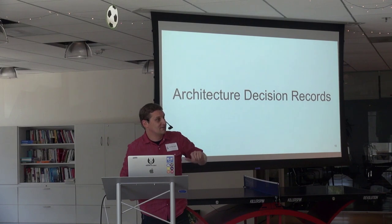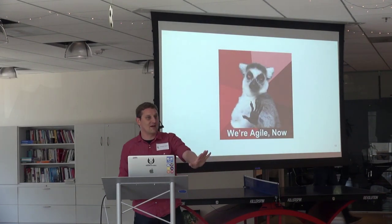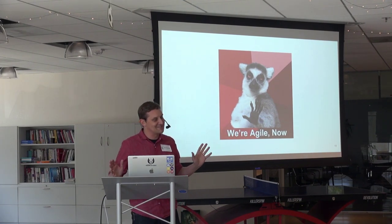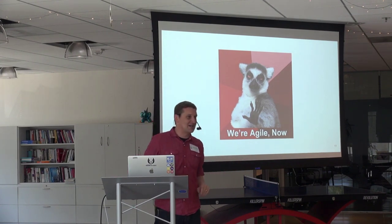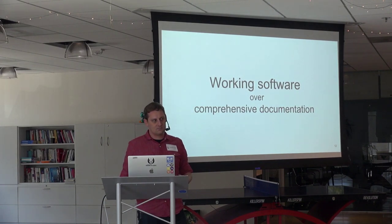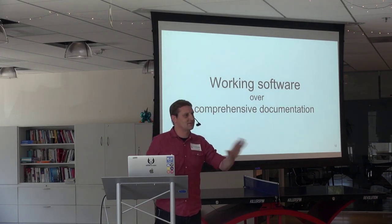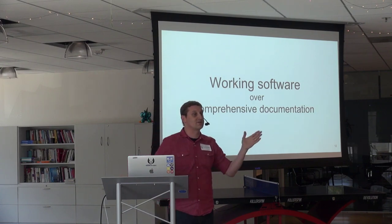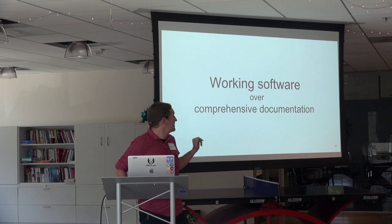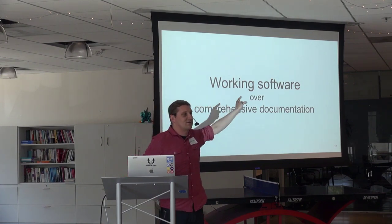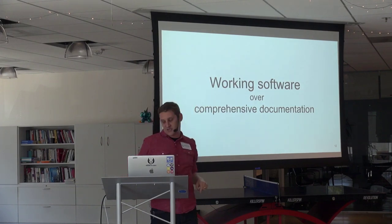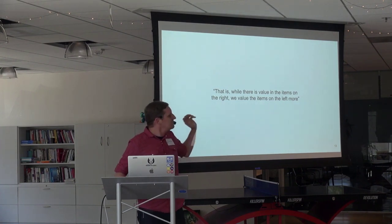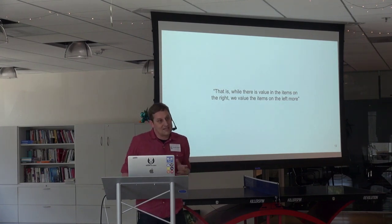I know I said architecture and records, so don't jump out of the boat just yet — like, we're agile now, we don't do architecture, we don't do records and documentation. Before I get into it, I'm going to take a little detour through the agile manifesto. Working software over comprehensive documentation — this is one of the four key values. We like working software; that's where we deliver value. But there's also value in the items on the right. Documentation is not inherently evil.